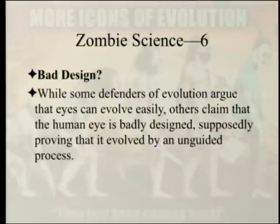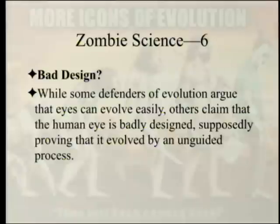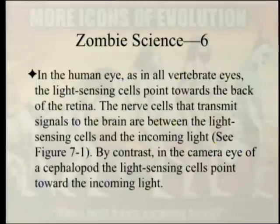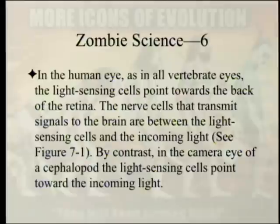Bad design. While some defenders of evolution argue that eyes can evolve easily, others claim the human eye is badly designed, supposedly proving it evolved by an unguided process. In the human eye, as in all vertebrate eyes, the light-sensing cells point toward the back of the retina, and the nerve cells transmitting signals to the brain are between the light-sensing cells and the incoming light. By contrast, in the camera eye of a cephalopod, the light-sensing cells point toward the incoming light.